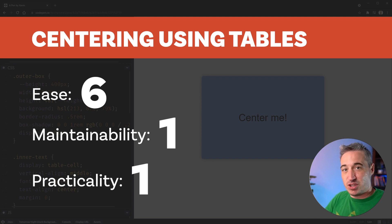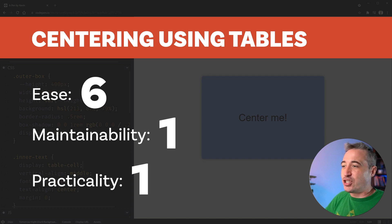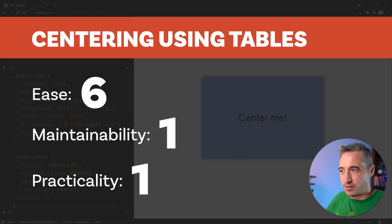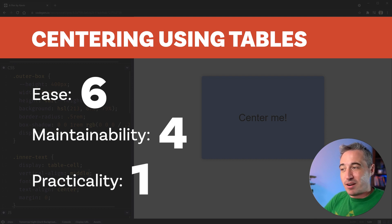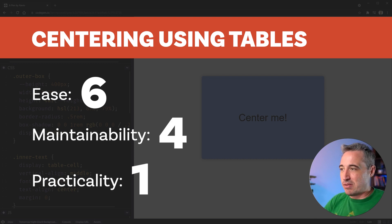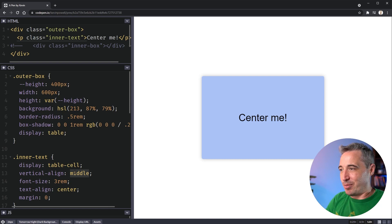How would I rate this for ease? It's a bit awkward. If you're already in a table, ease is a 10 — just drop in vertical-align: middle. But if you're not, it drops to around a six because you have to set display: table on the outside and display: table-cell on the inside. Maintainability drops way down — people would come across this and have no idea why you're doing it. Both maintainability and practicality are ones these days; there's no good reason to do this, and there are unintended side effects from things behaving like table cells. Maybe maintainability bumps to a three or four since vertical-align: middle is clearer than a line-height of 400px, but practicality stays at a one.